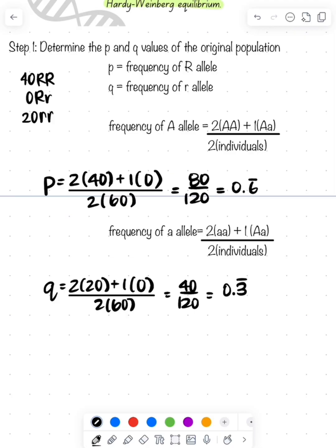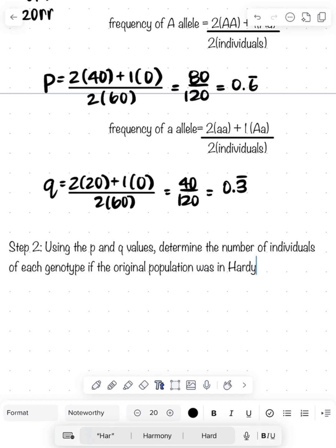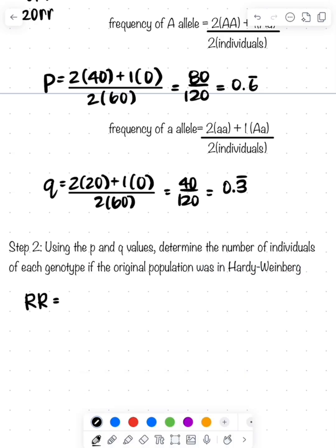Now I need to figure out how many individuals of that original population with the Hardy-Weinberg equilibrium would have these different genotypes. My homozygous dominant is P squared, so 0.6 repeating squared, which is 0.4 repeating.